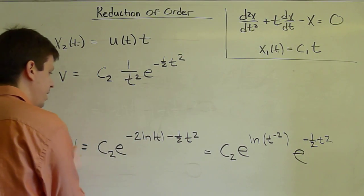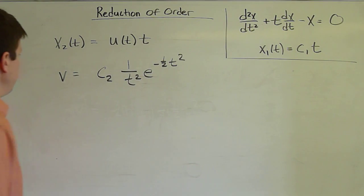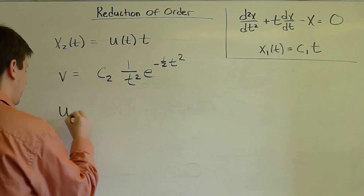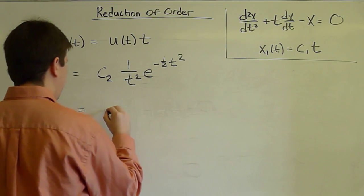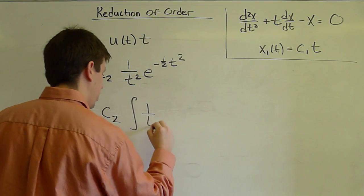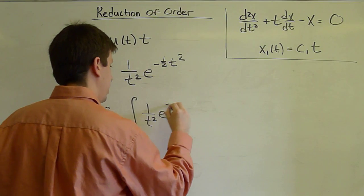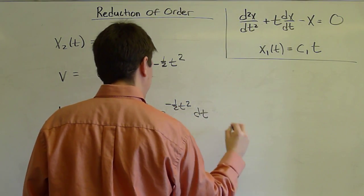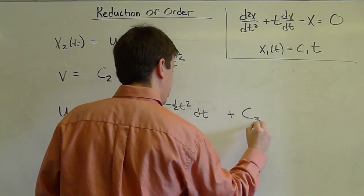So we found v. Now, u is defined to be the derivative. v was the derivative of u. So to get u, we must integrate v. So u is c2 times the integral of (1/t²) e^(-1/2 t²) dt, plus an integration constant c3.